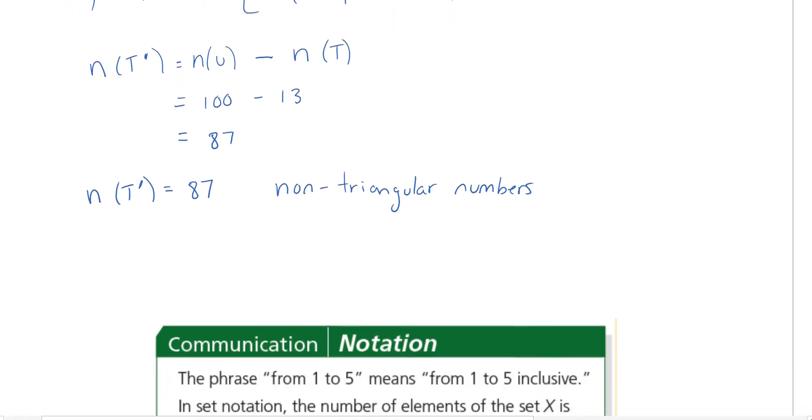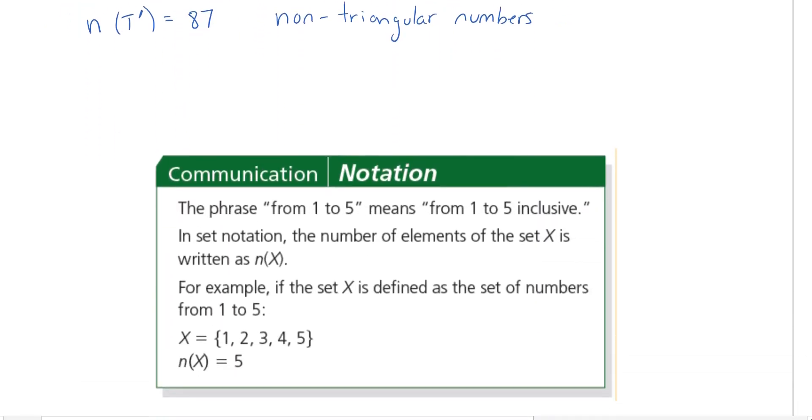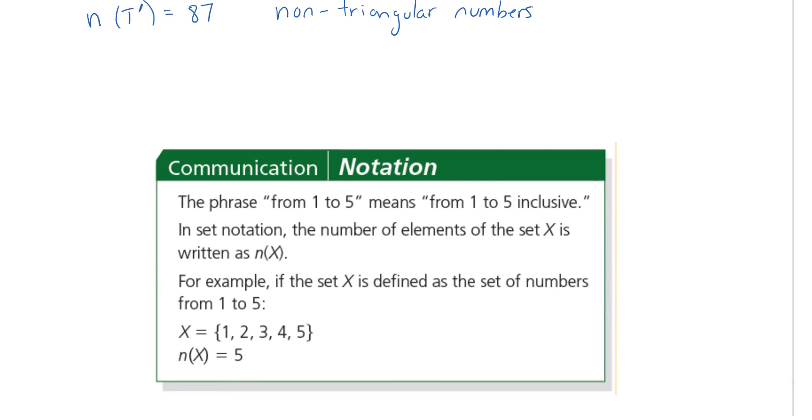Just a note on communication here. Communication notation, the phrase from 1 to 5 means from 1 to 5 inclusive. In set notation, the number of elements is the set X. It's written as n(X). So, we were talking about that. So, counting the elements as opposed to listing the elements.